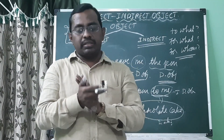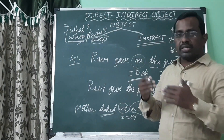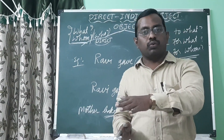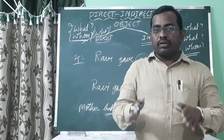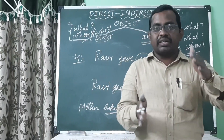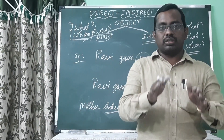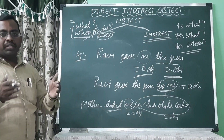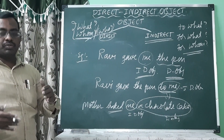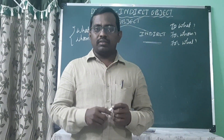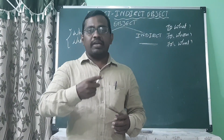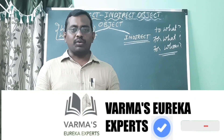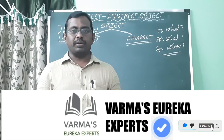So a direct object always follows the transitive verb, and without the direct object the meaning of a transitive verb is incomplete. The direct object receives the action of the transitive verb. The indirect object receives or gets the direct object. Also note: a direct object may not always be a thing — it can sometimes be a person. And without a direct object, an indirect object cannot exist in the sentence. Thank you all for watching.